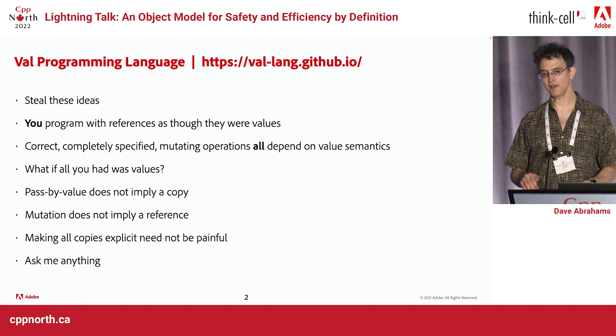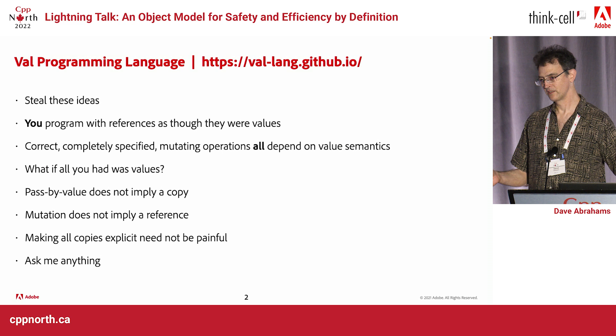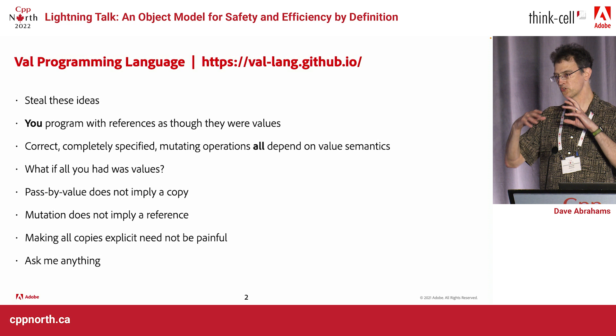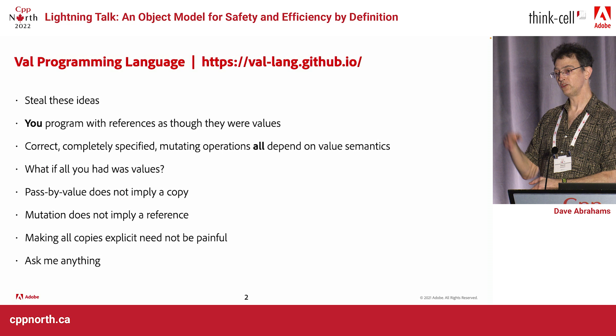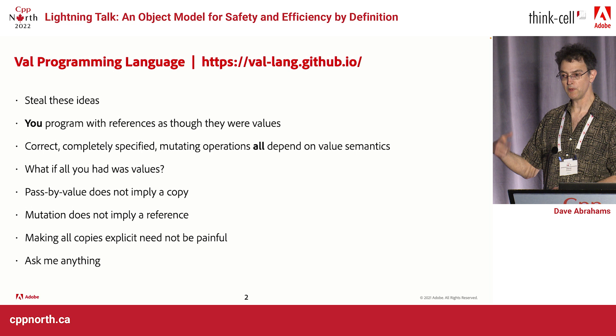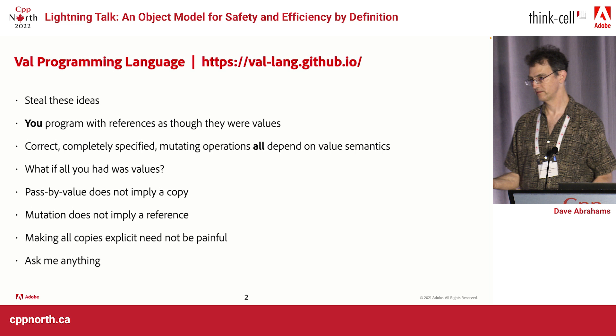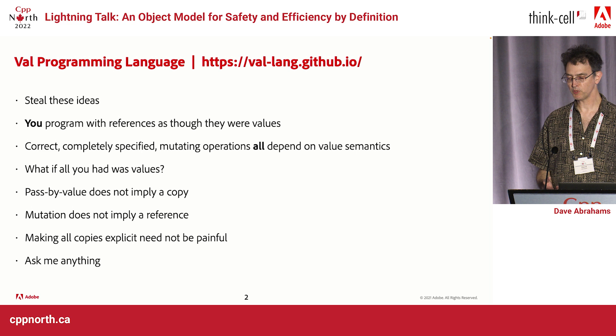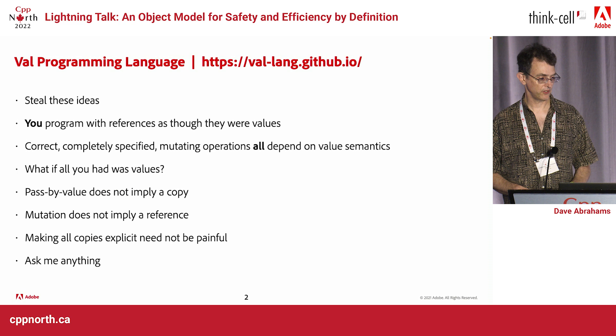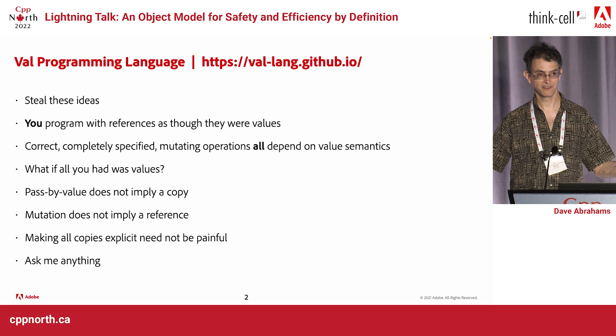Once you realize you don't have to copy all the time to pass by value, making all copies explicit actually doesn't have to be painful. In Val's design, you can program as though it was Python or C++ with regular values, and the compiler will tell you when you need to copy — in fact, it'll offer to insert the copies for you. This is not painful because they're rare. One of the problems — why do we pass by reference all the time in C++? It's because C++ copies eagerly. So that's all I got for today. Ask me anything.